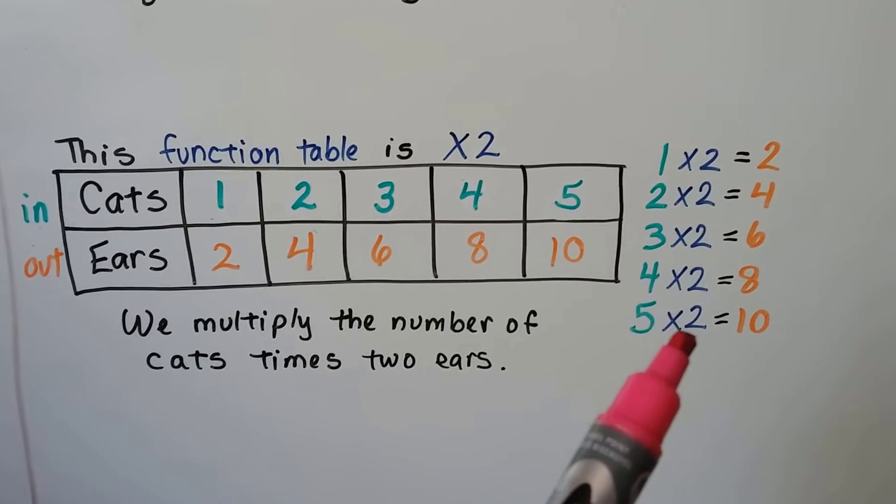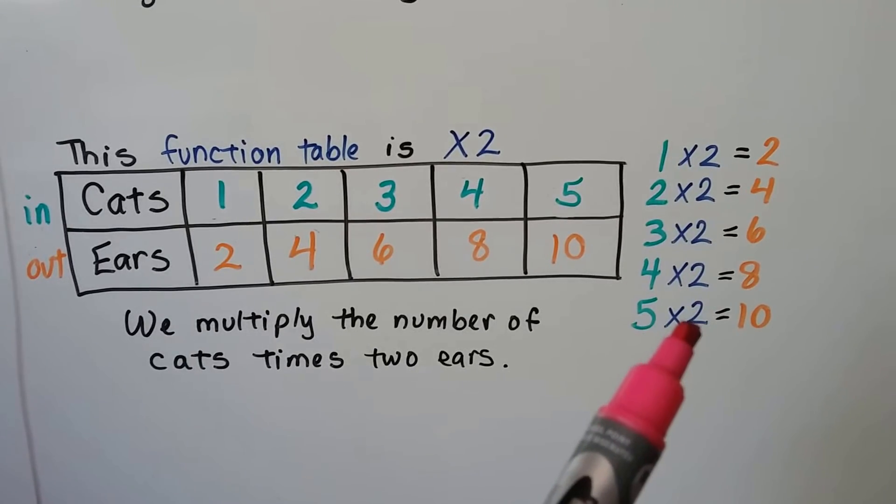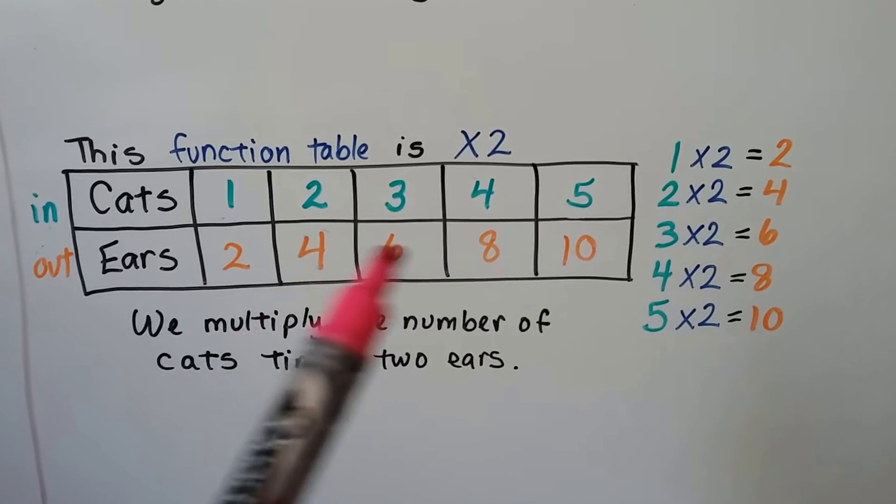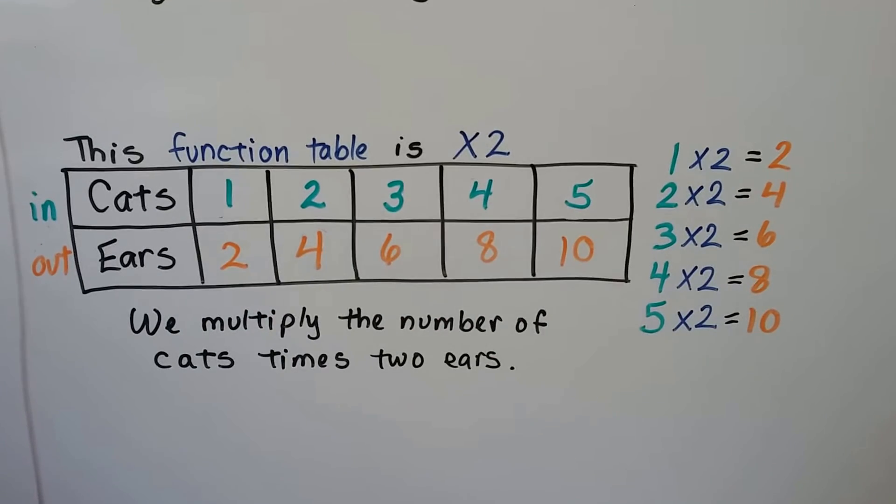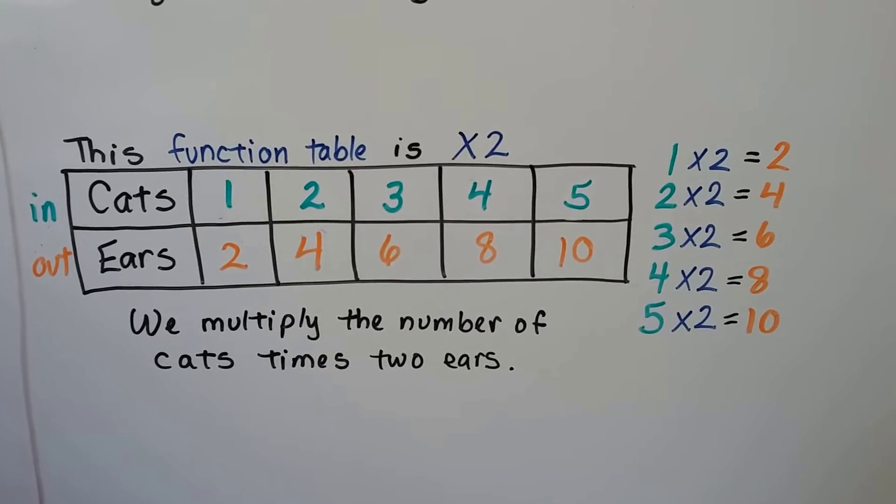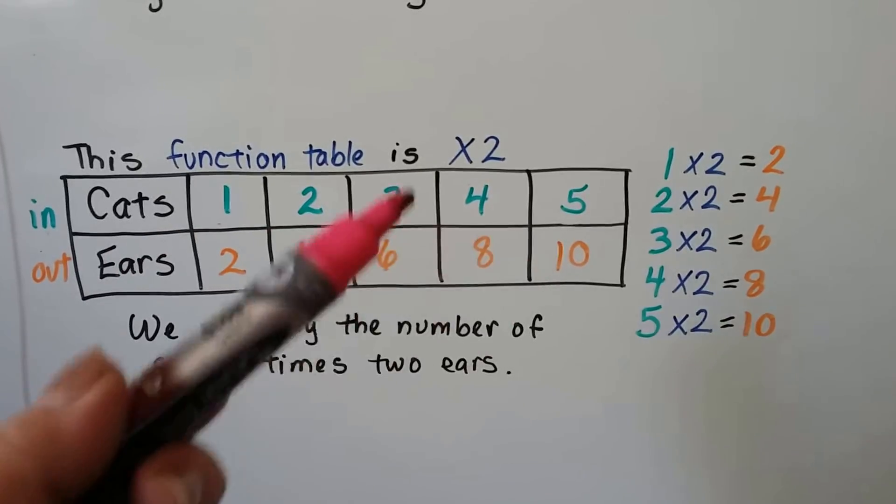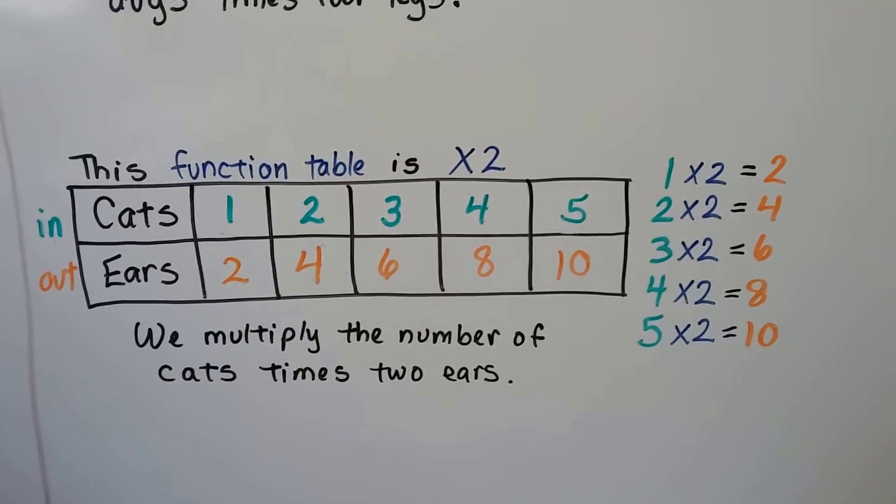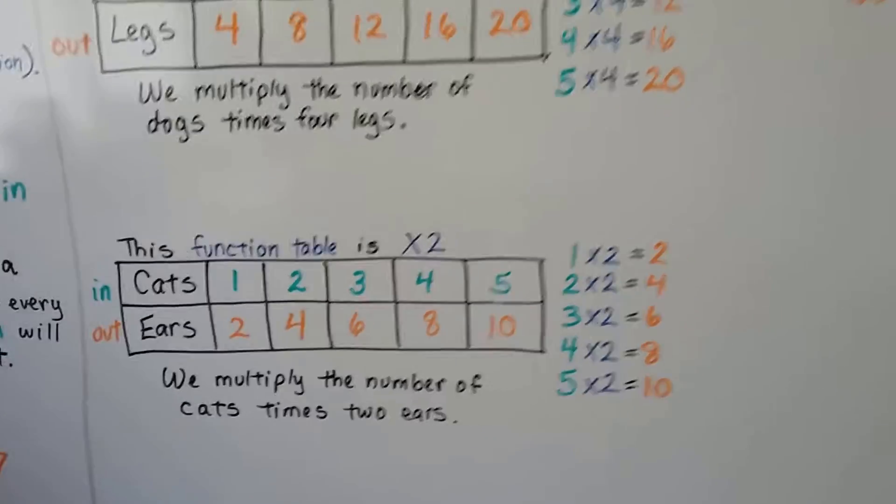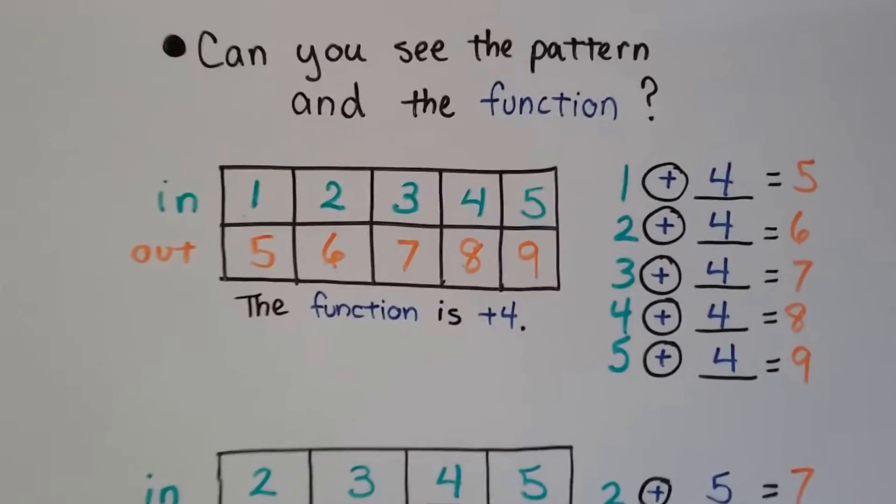We're multiplying every single number of cats times 2 ears, and then that's the outcome of how many ears we have. We multiply the number of cats times 2 ears. So this entire function table is times 2. That's the function. You can see the pattern and the function that's happening.